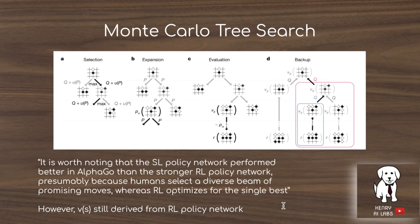Now we have a sense of the four neural networks used in AlphaGo: three policy networks — a rollout policy with lower accuracy but faster inference, the supervised learning policy network, and the policy network trained with self-play and policy gradients — plus a fourth network, the value estimator, which predicts the winning probability given a state up to the end of the episode.